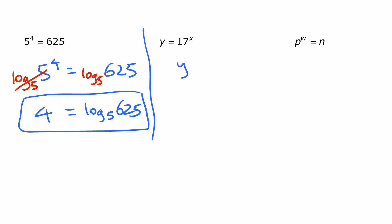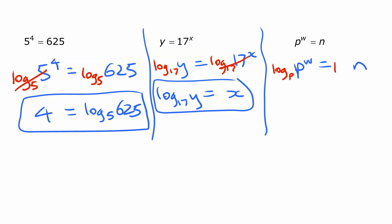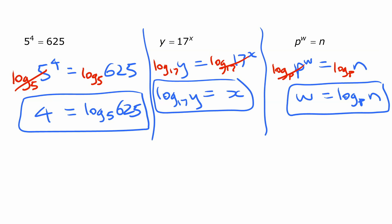Next, y equals seventeen to the x. We take the log base seventeen of both sides, that cancels out, and we have x equals log base seventeen of y — that's logarithmic form. Last one: p to the w equals n. We take the log base p of both sides because that's the base of the exponential. That cancels out and we have w equals log base p of n. It's just using inverse operations — but a new pair of inverse operations.